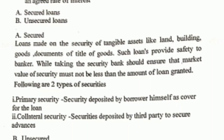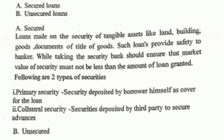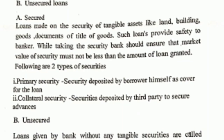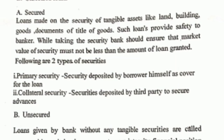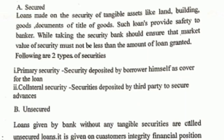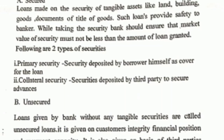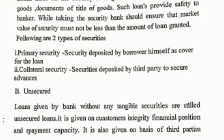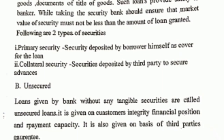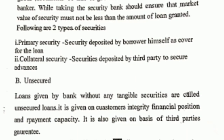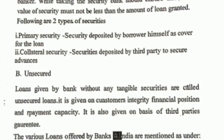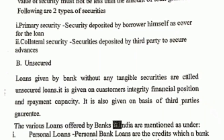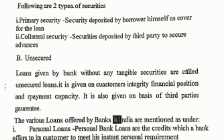Vehicle loans are also normal. Nowadays securities are not too important, but a few banking institutions still have the habit of taking securities. So, to summarize: a loan is a huge amount for a long period of time. There are secured loans and unsecured loans. Secured loans have two types of securities — primary security and collateral security. Various types of loans include home loan, land loan, vehicle loan, educational loan, and bank loan against property.